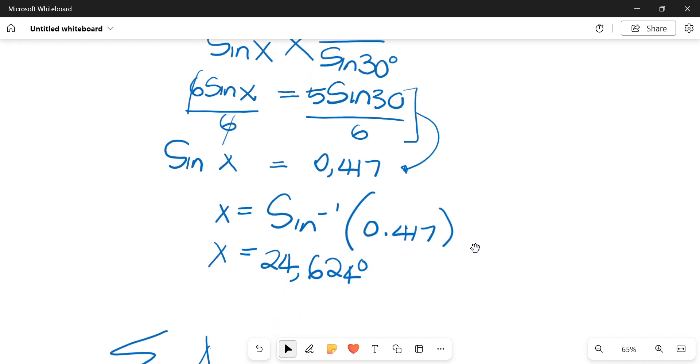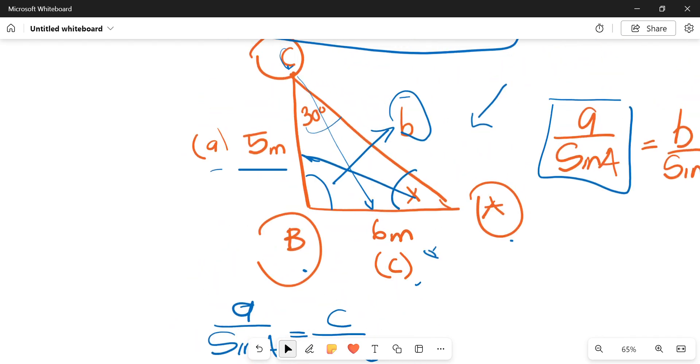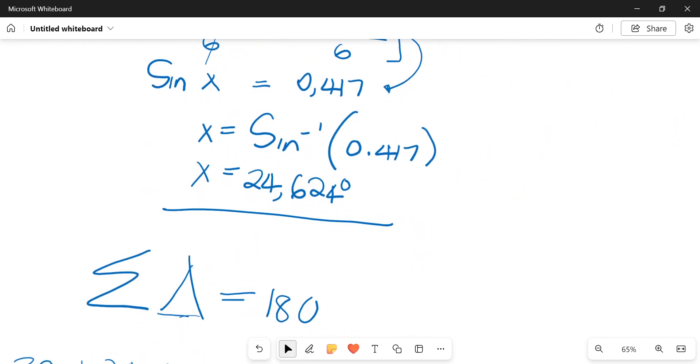Then essentially, it gives you the answer that you're looking for. So X, which was the angle at corner A, is essentially 24.624. And that is essentially method A, how you could use it to calculate an unknown angle.